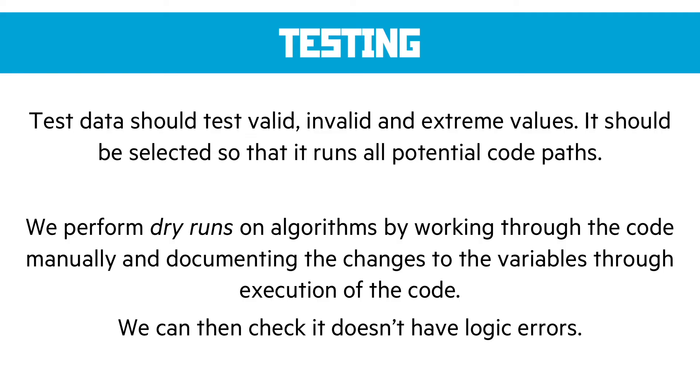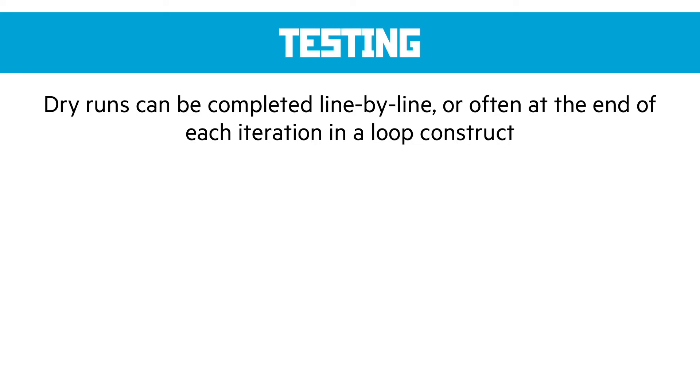What we do when we're planning these algorithms out is we perform dry runs. And this is where we take the code, and we take a table, and we manually work through it line by line, and document the changes to the variables as the code executes. Now, this is often done on a line by line basis, but the examples we see in the past papers tend to be on iterations. We can then check that the code itself doesn't have any logic errors before we go and implement it. Dry runs happen line by line, but often, at the end of each iteration in a loop, we would just record the changes to the variables.